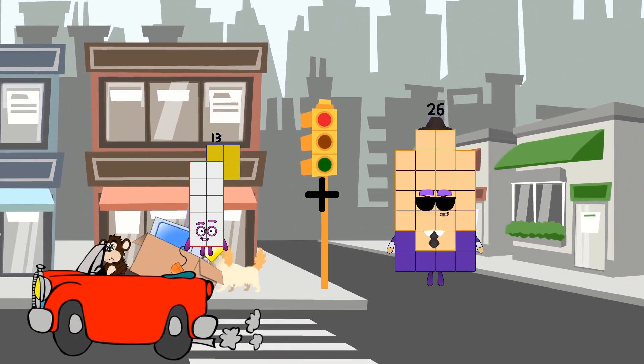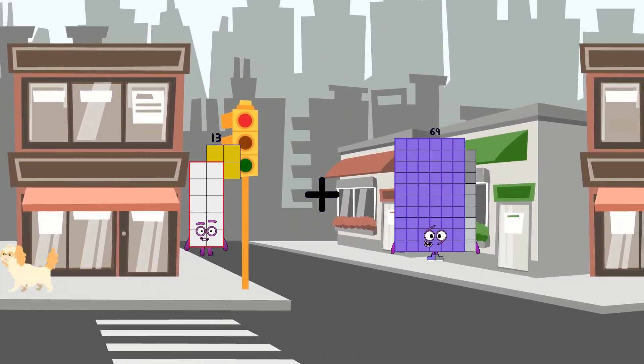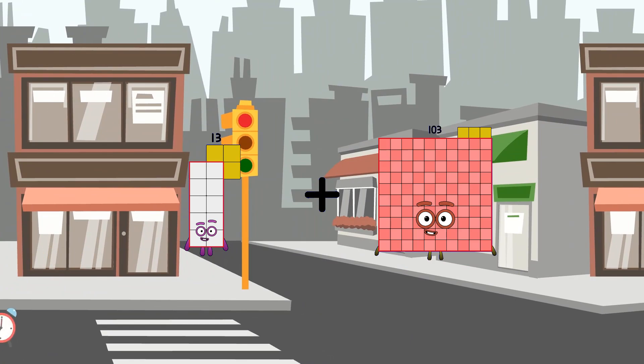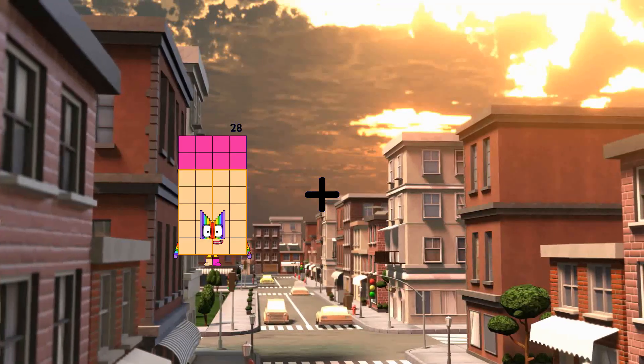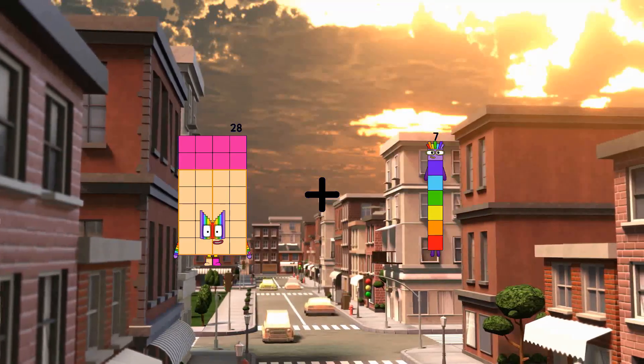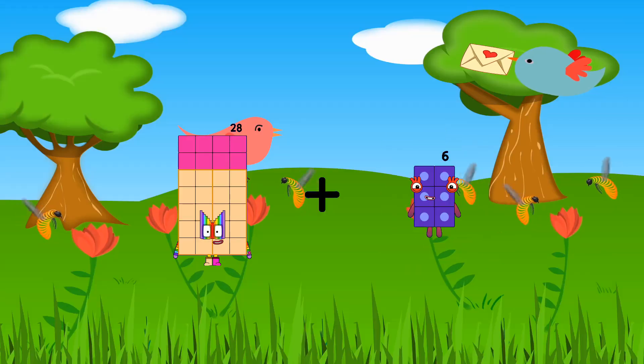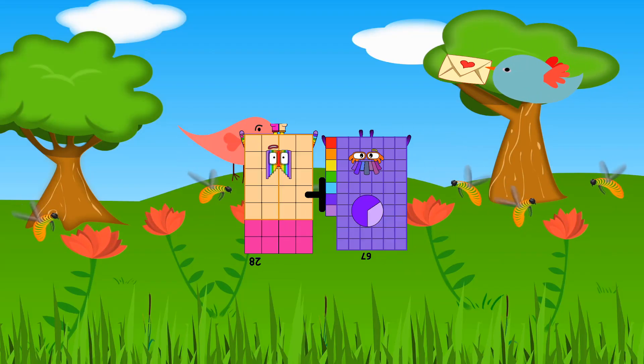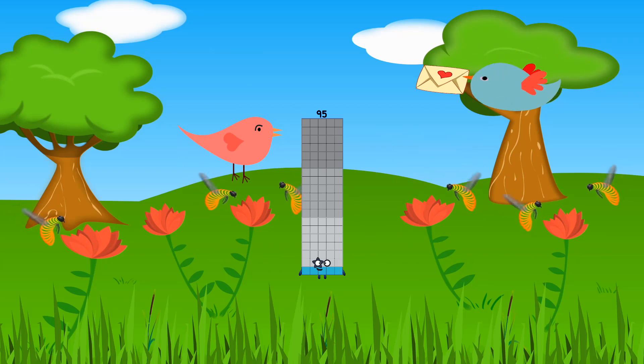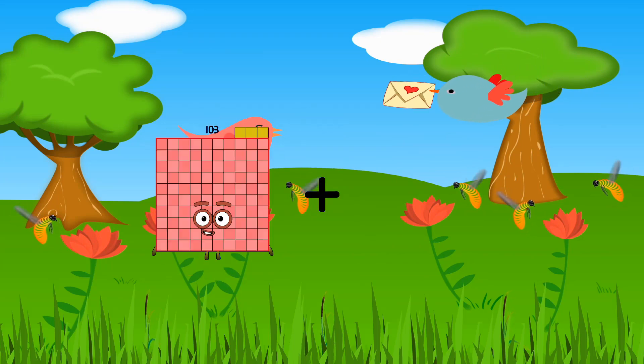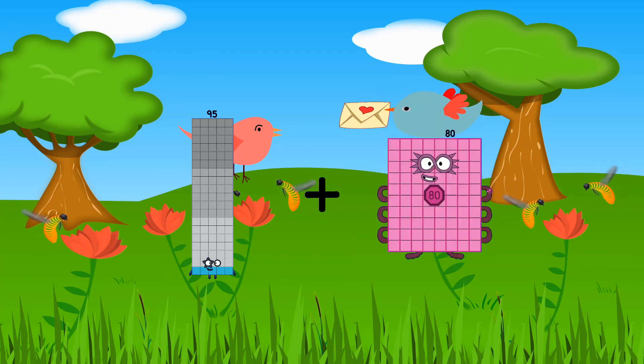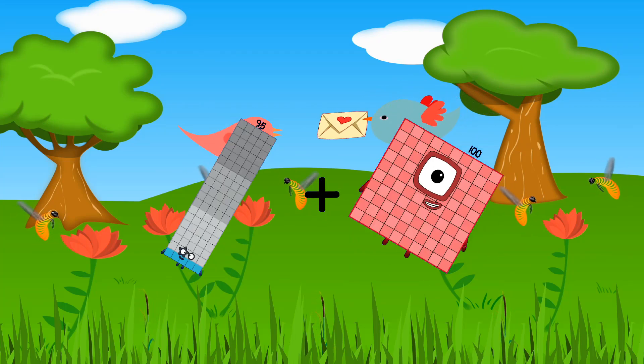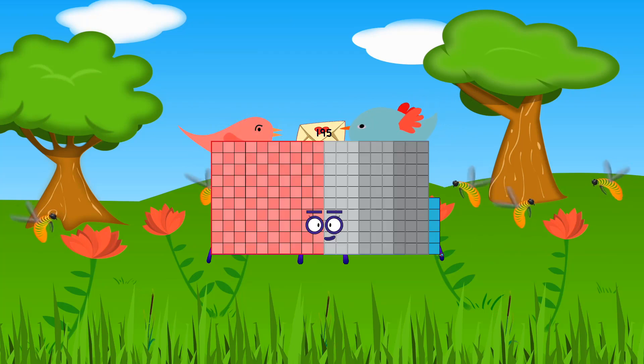13 plus 103 equals 115. 28 plus 67 equals 95. 95 plus 100 equals 195.